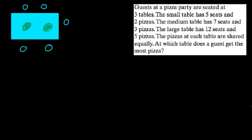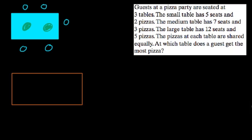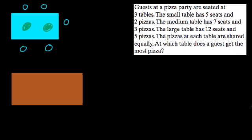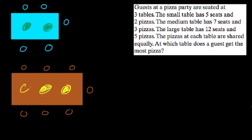So five seats and two pizzas at the small table. Then there's a medium table. At the medium table we have seven seats — one, two, three, four, five, six, seven — and three pizzas.